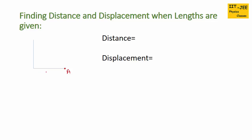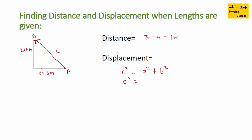Now let's find distance and displacement when lengths are given. Suppose a person starts from a point and travels 3 meters to the west and then 4 meters to the north up to point B. Distance would be 3 plus 4, which is 7 meters. Displacement would be a straight line between A and B, with direction towards B. To find the length of this line we use the Pythagorean theorem: C² = A² + B², so C² = 3² + 4² = 9 + 16 = 25, so C equals 5 meters.